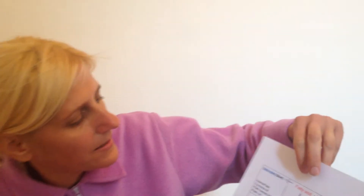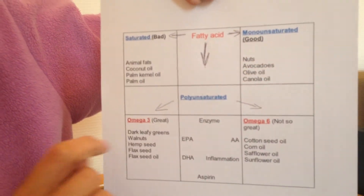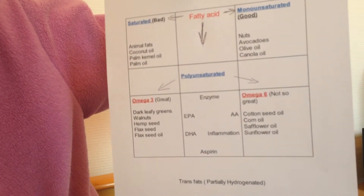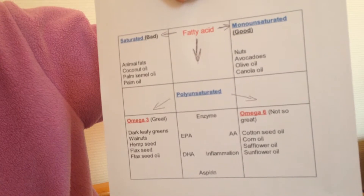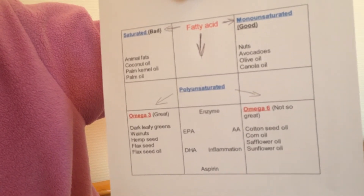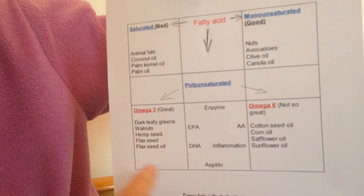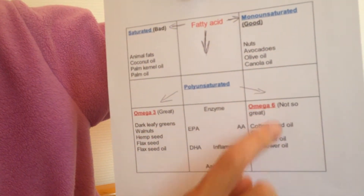Fats are made of fatty acids. The three fatty acids are saturated fat, monounsaturated fat, and polyunsaturated fat. Generally fats are known by the primary component. The two types of polyunsaturated fats are omega-3 and omega-6.